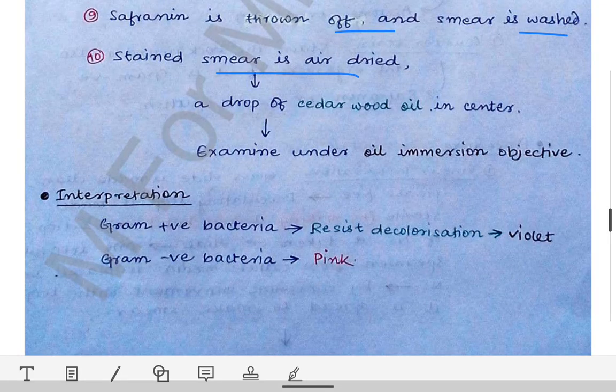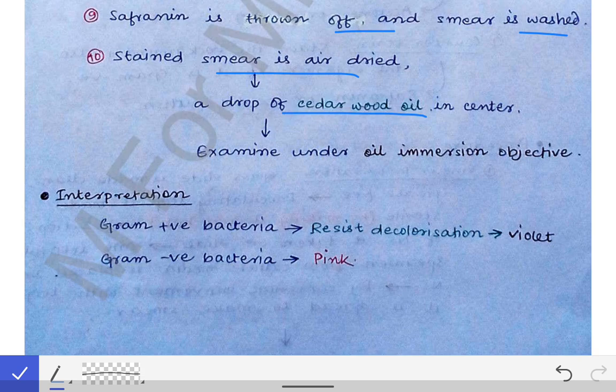After the specimen is air dried, we put cedar wood oil in the center of the specimen. This is a very important step to see it under the 100x lens. If you do not put cedar wood oil for 100x, you will not be able to see the microorganism. Then we examine it under the oil immersion objective lens.